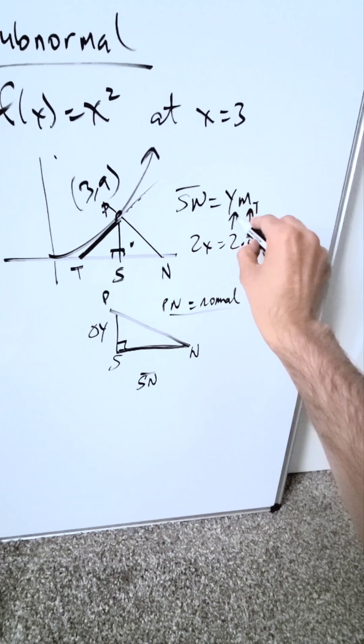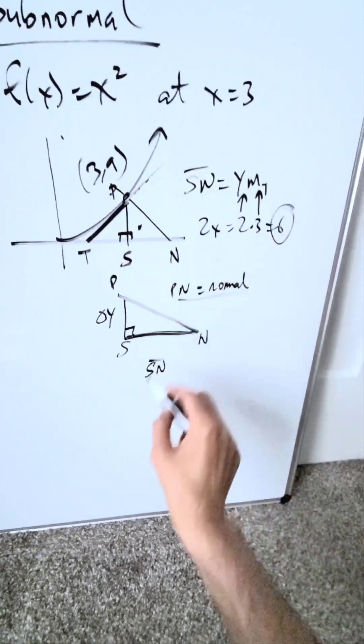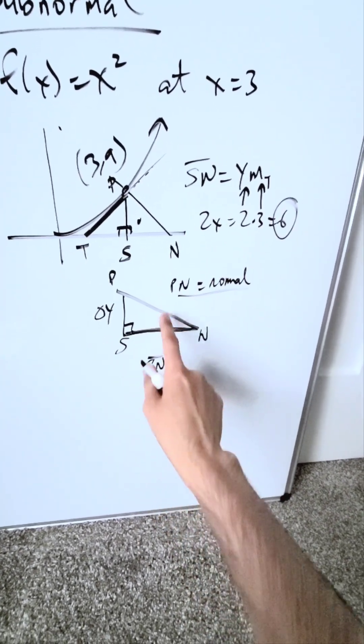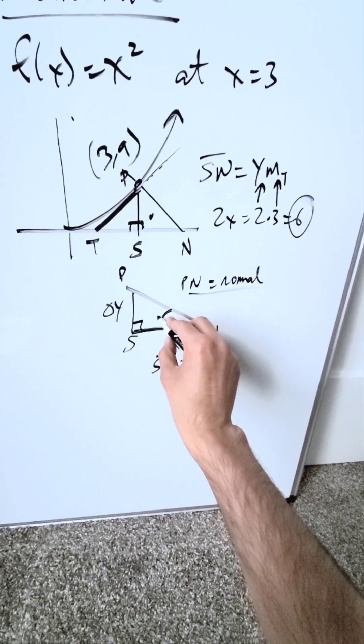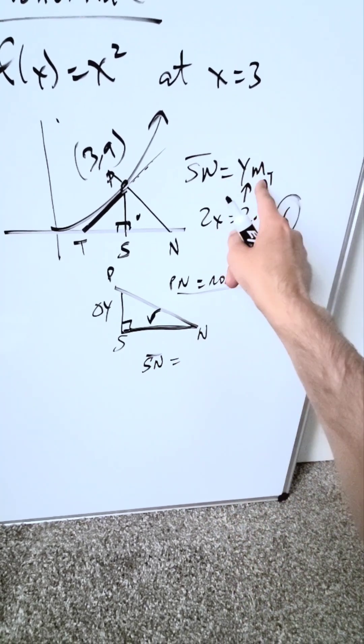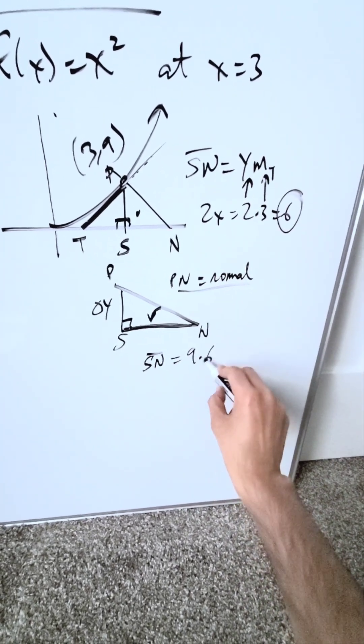I've determined this. What's my y value? It's a y value here. My length of the subnormal, which is a projection of your normal onto your x-axis, is equal to y times mt. 9 times your slope, which is 54.